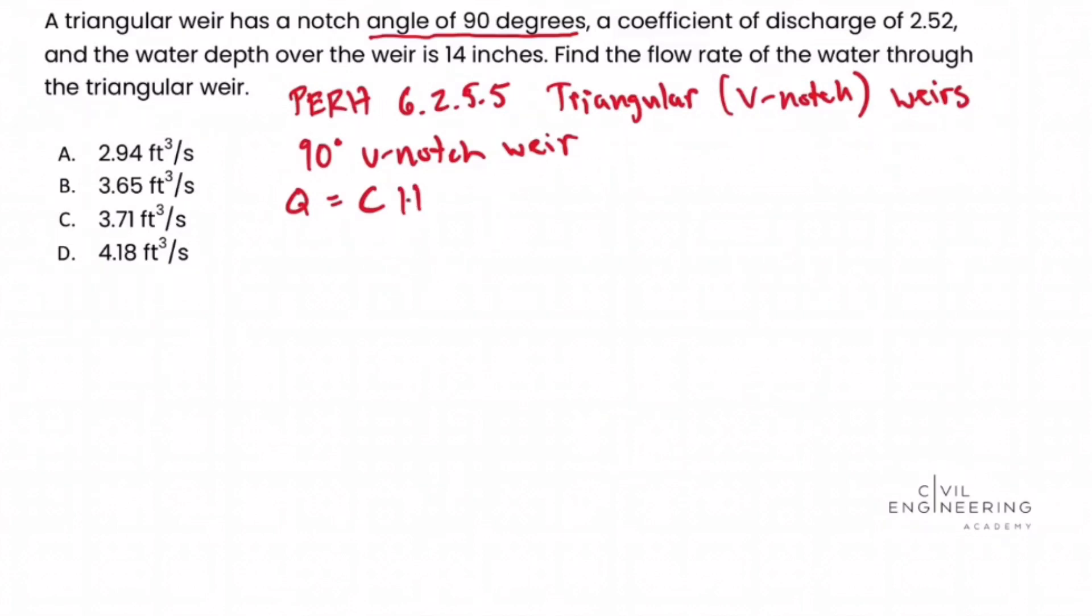which is the head or depth of discharge over the weir in feet, raised to the 5 halves. Now, we're going to plug in what we have and solve this problem, but we need to be careful.